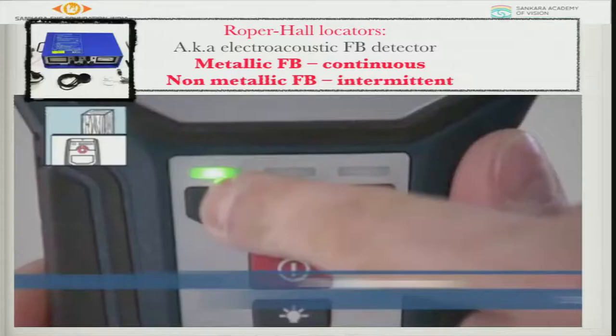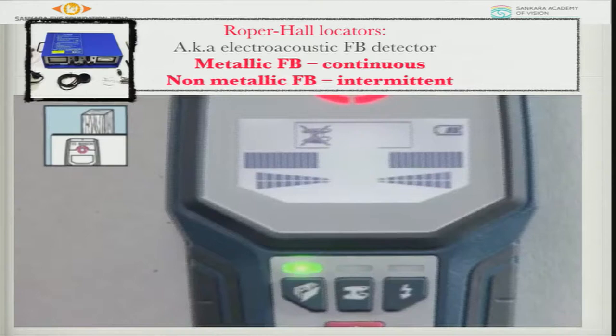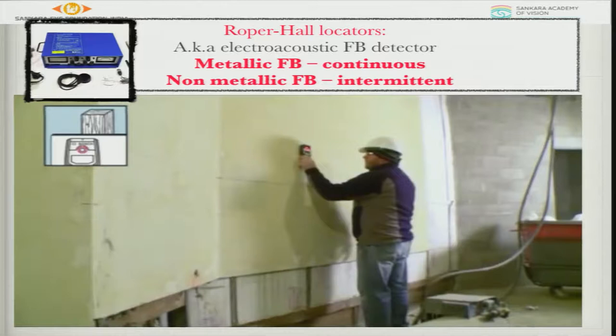Another type is called a Roper Hall — these are all different technologies that were available before and have been used in different cases. As you can see, this is a wooden foreign body, so it can identify a non-metallic foreign body as well, giving identification of exactly where it is. We can switch the mode to metal and identify where it is.